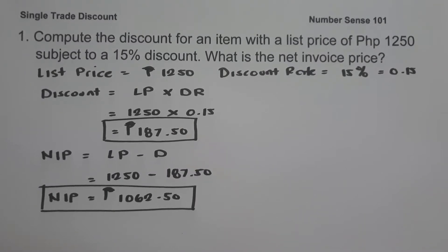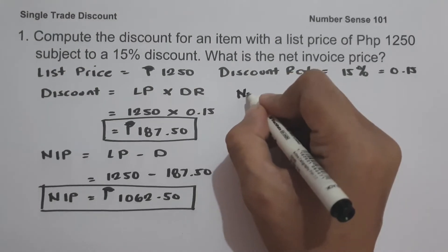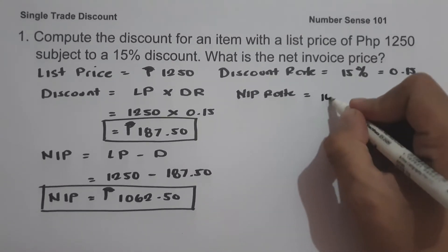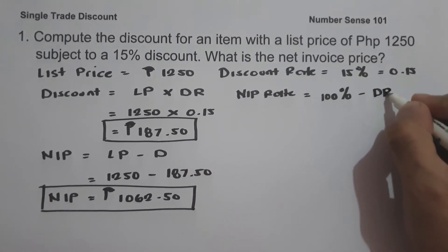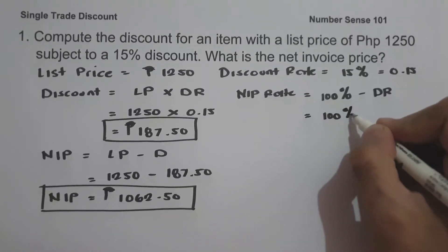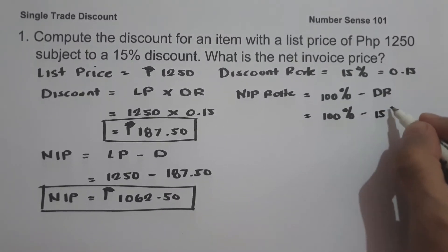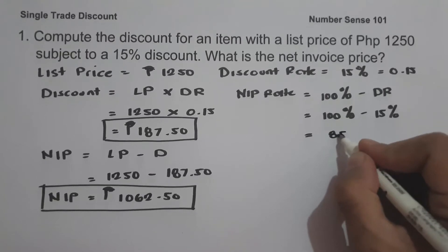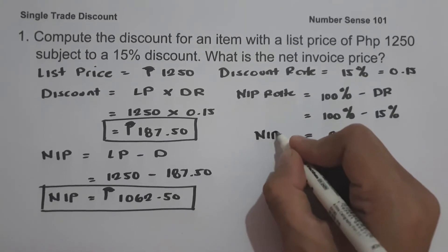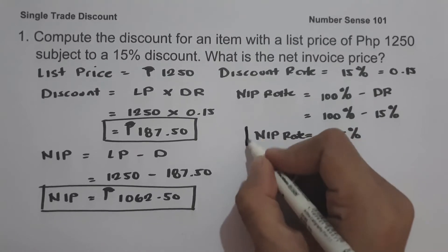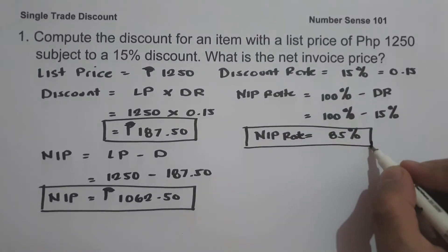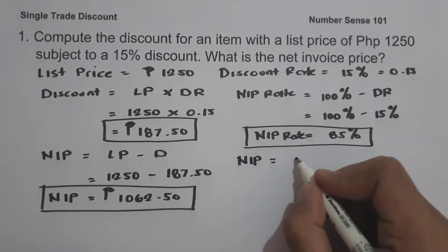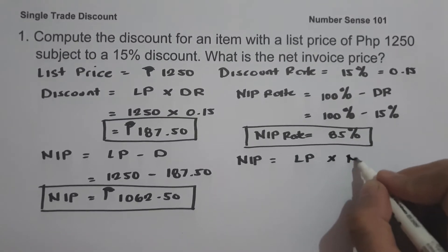Let me give you another solution on how we can find the net invoice price. First, let us determine the NIP rate. To find the NIP rate, we use the formula: one hundred percent minus the discount rate. So one hundred percent minus fifteen percent equals eighty-five percent. This is our NIP rate. Then the net invoice price equals list price multiplied by the NIP rate.